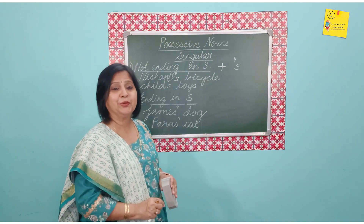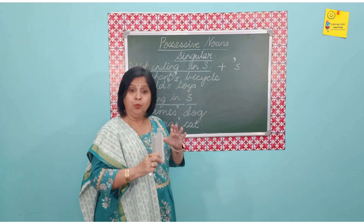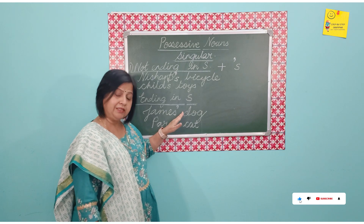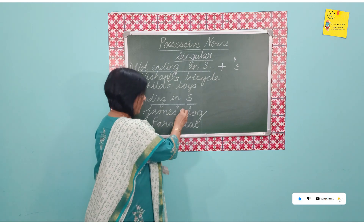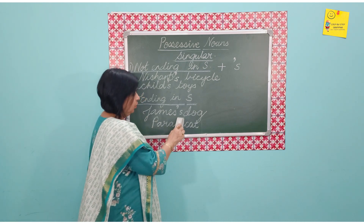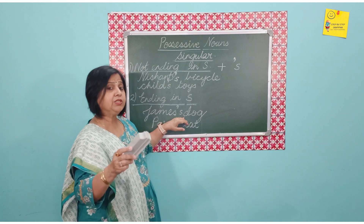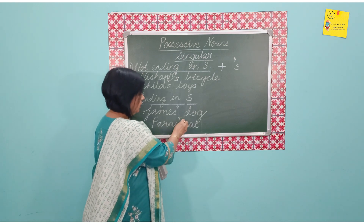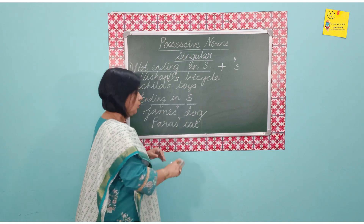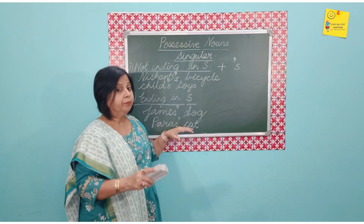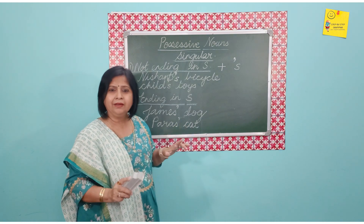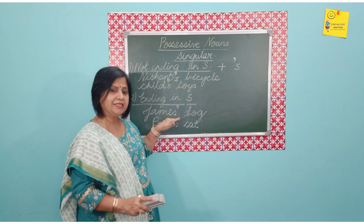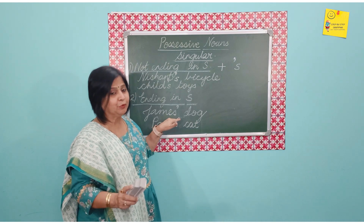There are two accepted ways of writing this. Generally we follow the form without the extra S, because adding it changes the pronunciation. We just write James' dog or Paras' cat — it is understood. Some prefer to also add an S after the apostrophe, and I wouldn't say that is incorrect, but generally we use the form where we do not add an extra S after the apostrophe.